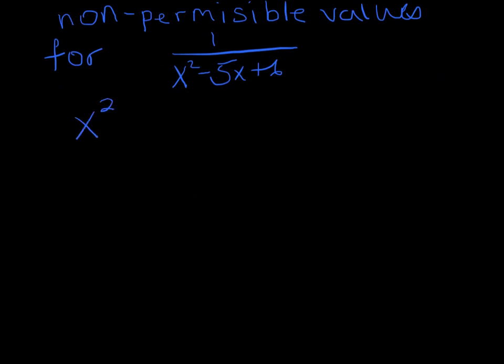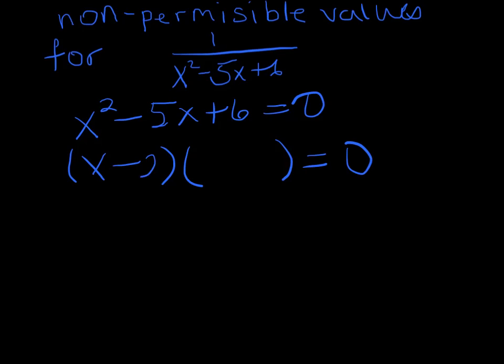And how do we do that? Well, set up your equation here, x squared minus 5x plus 6. So what's going to make that equal to 0? Well, the way we do that is, again, we factor, and we end up with x minus 2, x minus 3, and x is 2, and x is 3.